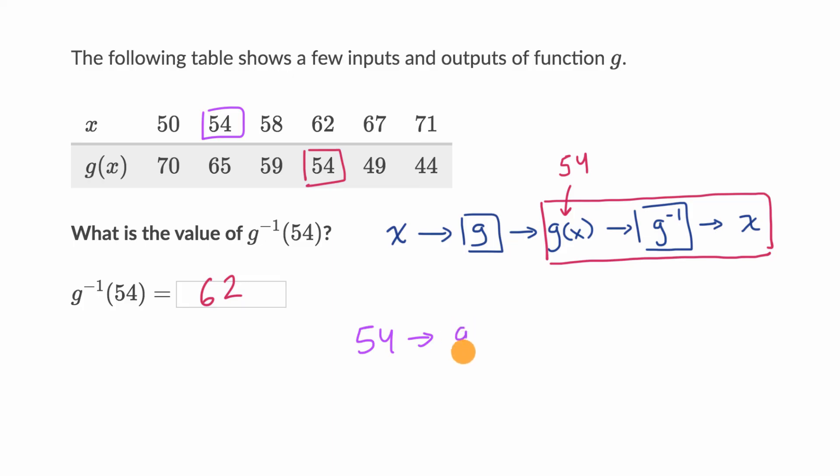So if you wanted to evaluate g of 54, then you would look at the 54 up here and say that's going to be equal to 65.